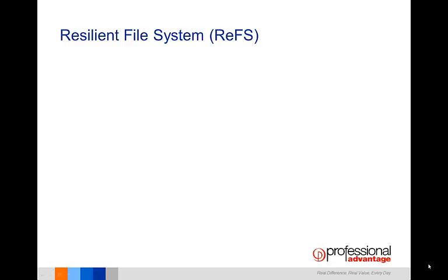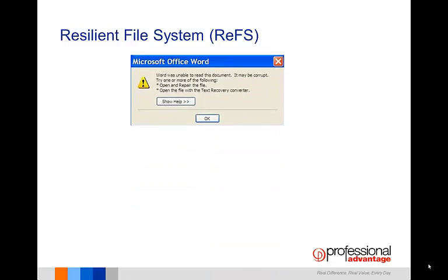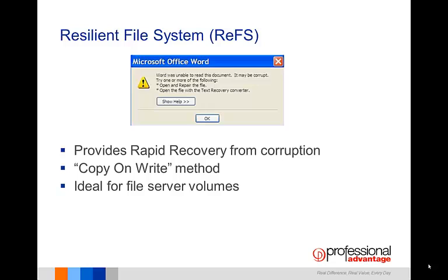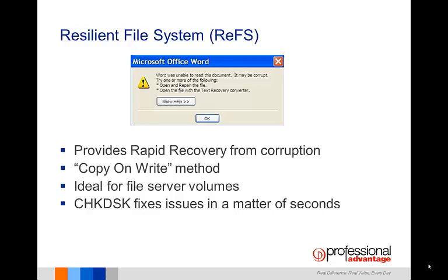Resilient File System. Windows Server 2012 introduces a newly engineered file system called Resilient File System or REFS. REFS provides rapid recovery from file system corruption without affecting availability. It does this by using a copy-on-write method to update files and save them to a new location every time it is updated, to avoid corruptions caused during disk power outage. It improves data integrity protection and is ideal for file server volumes. Windows Server 2012 has also made tremendous progress with the Check Disk Utility, where now it fixes data corruption issues in a matter of seconds instead of hours, and can run with no downtime even if the problem is with a system drive.